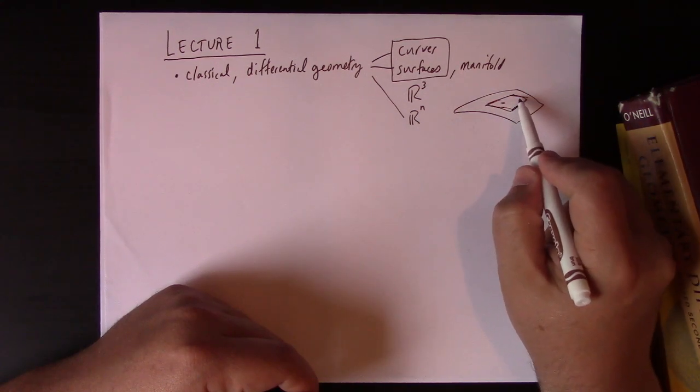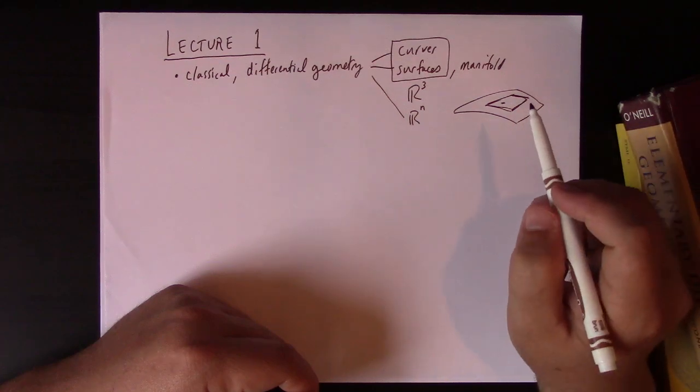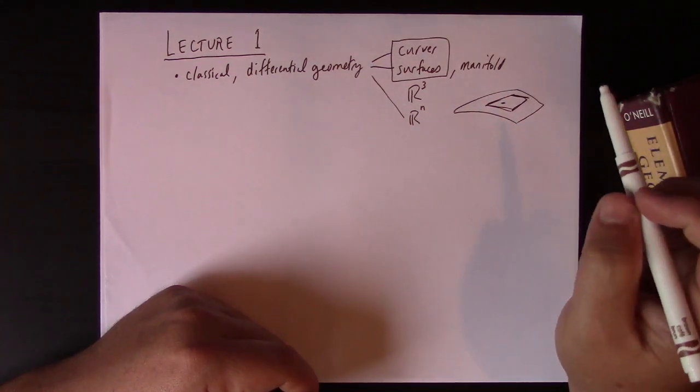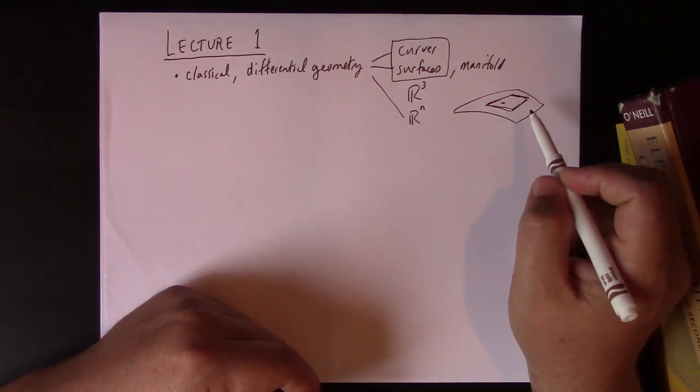When I write something like this, I think of that as being the tangent space of the manifold. We'll talk a lot about tangent spaces and cotangent spaces and all the sorts of objects you can define in these things.